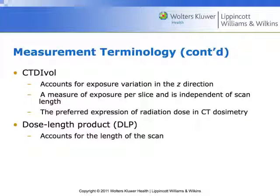CTDI volumetric accounts for all the exposure variations along the Z-axis, and it is independent of the scan length — it's slice by slice, showing what we'd expect to see throughout the scan volume. This is the metric we typically use.